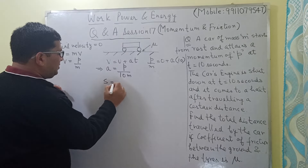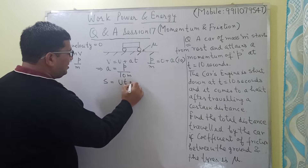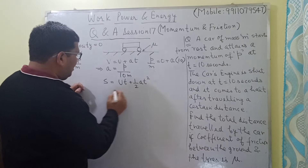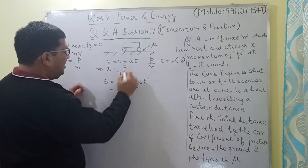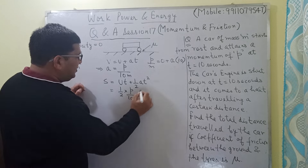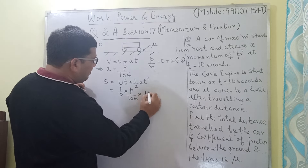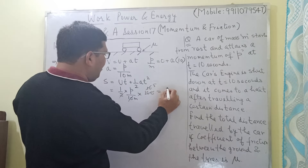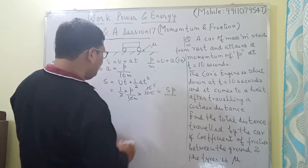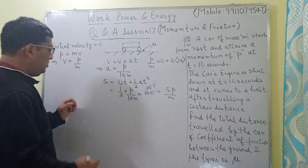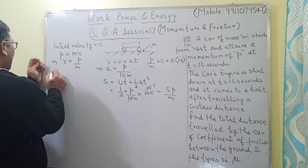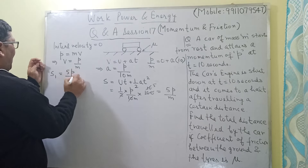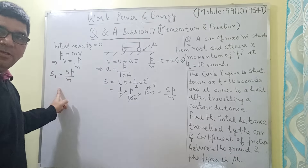Again using the equation of motion for uniform acceleration: s equals ut plus half a t squared. The initial velocity is 0, so s equals half times a times t squared. Substituting a equal to P over 10M and t equal to 10 seconds gives t squared equal to 100. Simplifying, s equals 5P divided by M. So the distance covered in the first part of the journey, S1, is equal to 5P upon M.